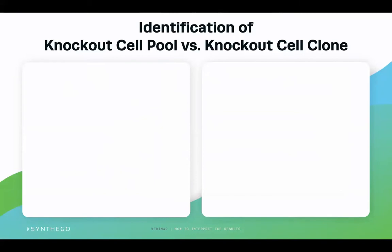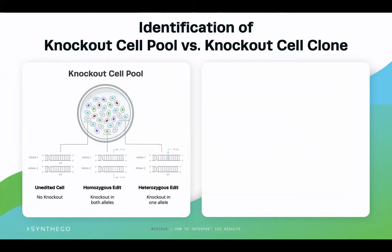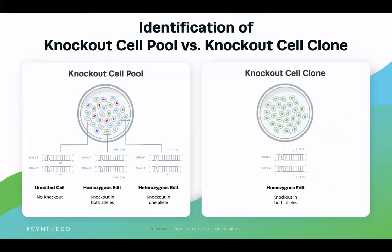Using ICE, you can determine the types of edits that are present in your samples. For example, in knockout experiments, you could use ICE to analyze both your knockout cell pool and your knockout cell clones. The cell pool population will contain a percentage of cells with no edits or wild type cells, and a percentage of cells containing a mixed amount of edits with varying zygosities. Knockout cell clones consist of a monoclonal population of cells containing the same knockout-induced indel profile. In both examples, ICE is a great tool to assist with assessing how well your knockout or knock-in CRISPR-edit experiments worked.